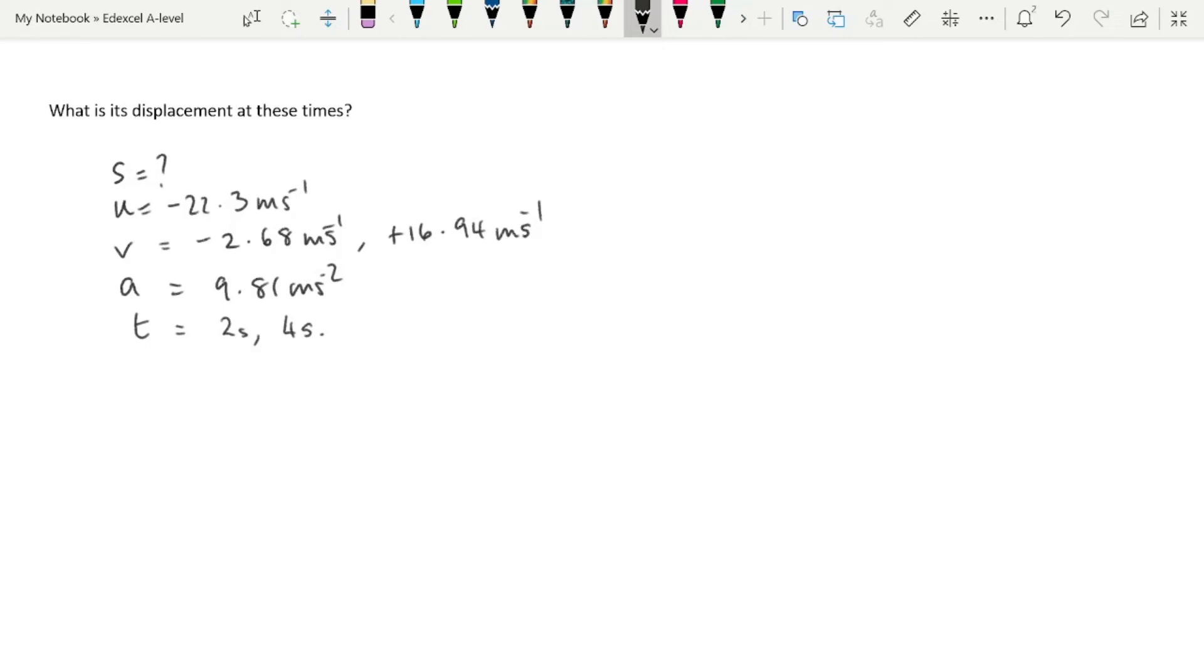We're going to use the equation s equals ut plus half at squared. I'm going to calculate it - you put in the values and check that you get the same answers, and you can pause the video and come back.